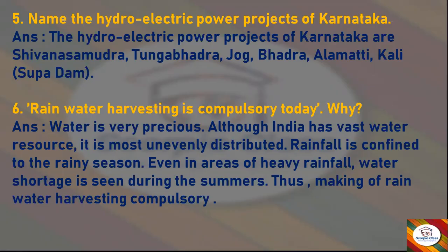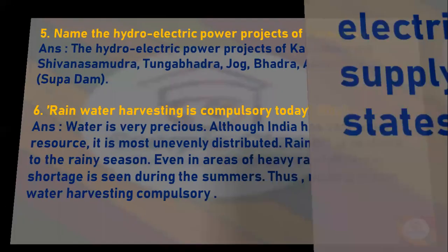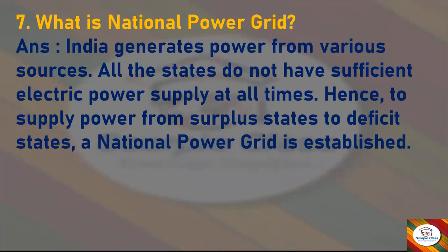Next question: Rainwater harvesting is compulsory today — why? Answer: Water is very precious. Although India has vast water resources, it is most unevenly distributed. Rainfall is confined to the rainy season, and even in areas of heavy rainfall, water shortage is seen during summers. This makes rainwater harvesting compulsory.